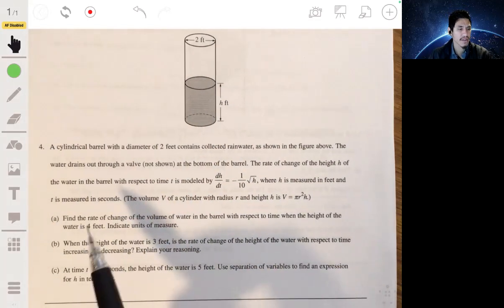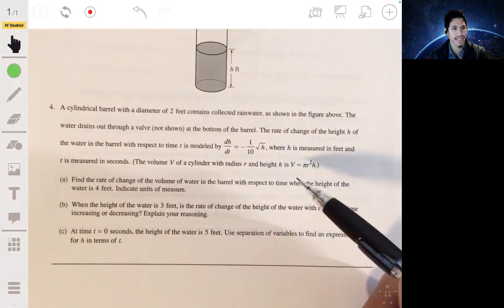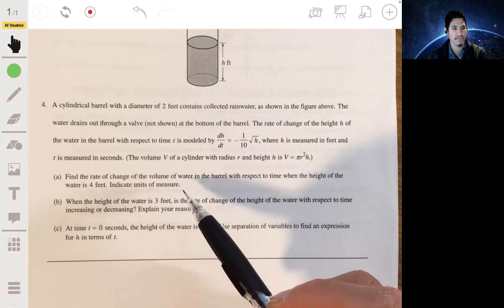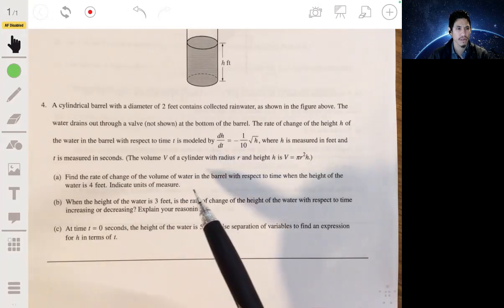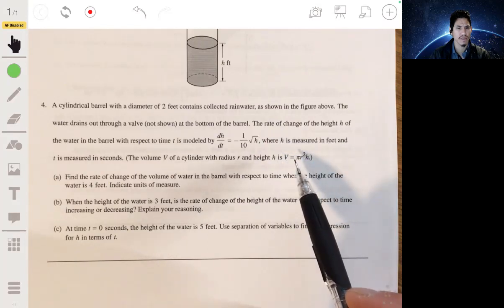Okay, part a, find the rate of change of the volume of water in the barrel with respect to time when the height of the water is four feet. Indicate units of measure. Okay, so you really just got to find the derivative of this and plug in four for h.